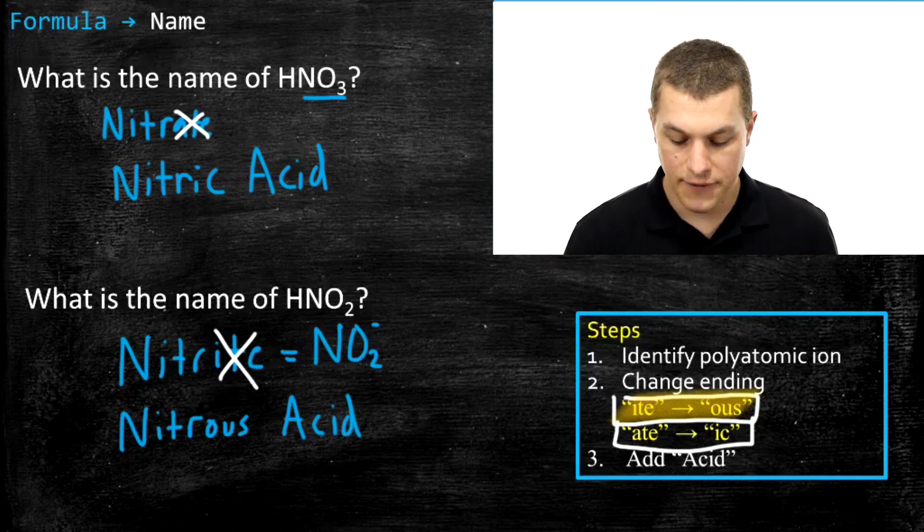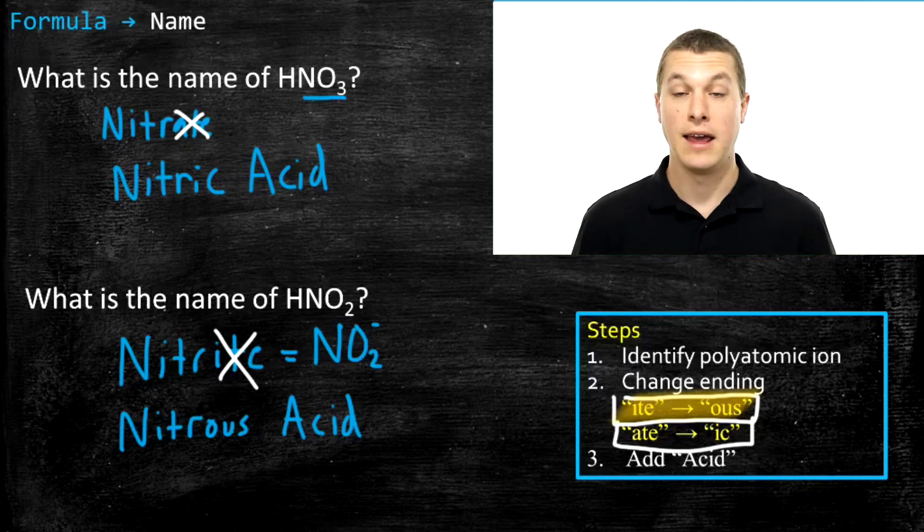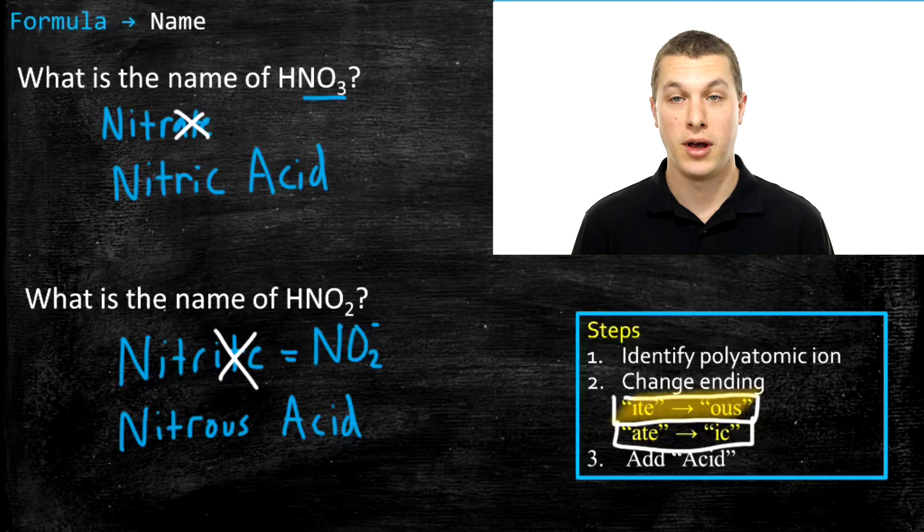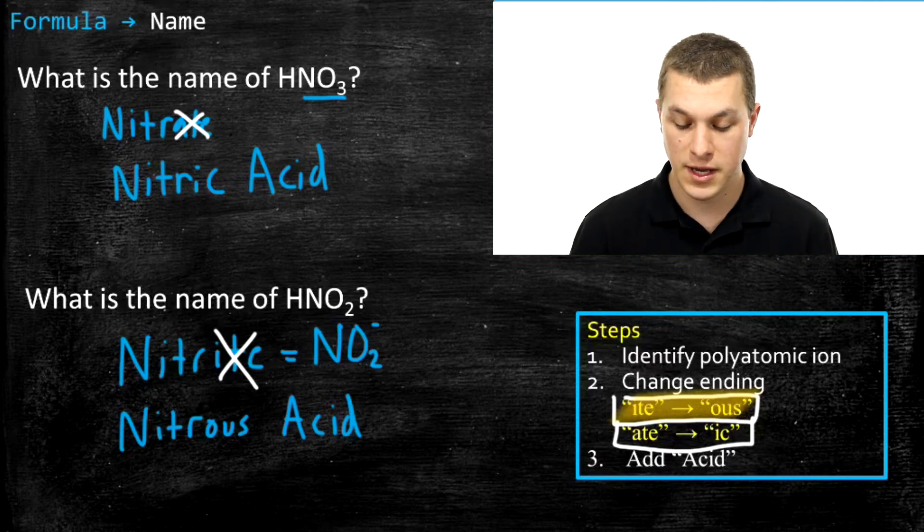So you can see that if I have a polyatomic ion that ends in -ate, like nitrate, it becomes nitric. On the other hand, if I have something that ends in -ite, like nitrite, it becomes nitrous. So it's important to know your polyatomic ions pretty well and know whether they end in -ite or -ate, because that actually tells you how to name your acid. Let's do a few more examples.